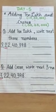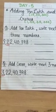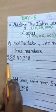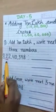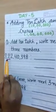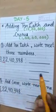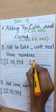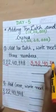Question number 1: add 10 lakh and write the next 3 numbers. Our given number is 3 crore 22 lakh 40,398. If I add 10 lakh to the given number, it is 22 lakh, so adding 10 lakh it will become 32 lakh. So the next number will be 3 crore 32 lakh 40,398.